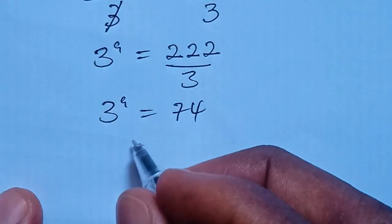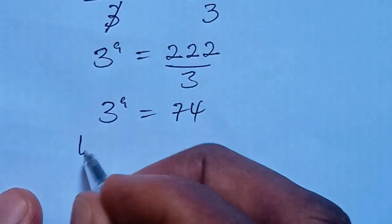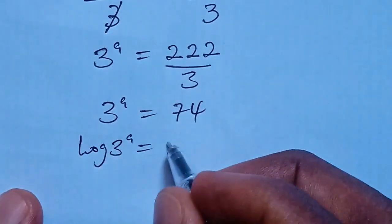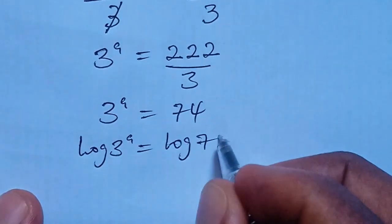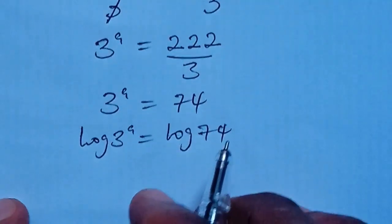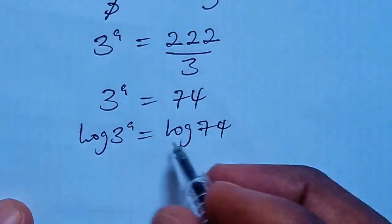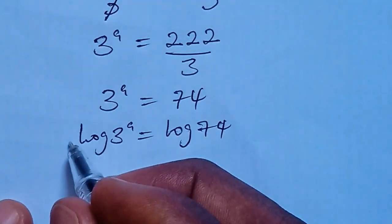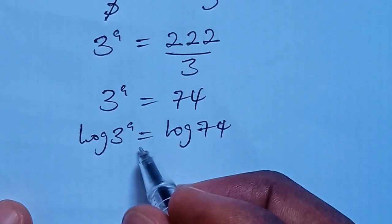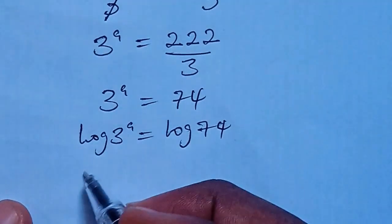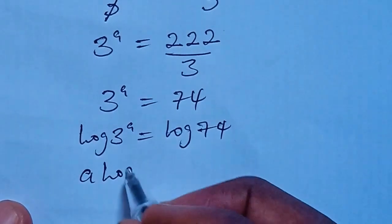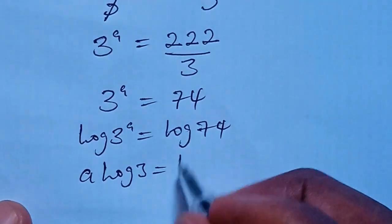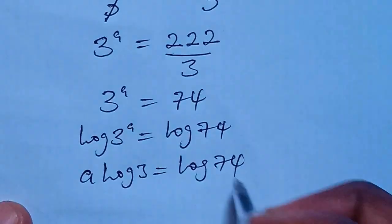Now, from here, we can take the log of both sides. Log of 3 to the power of A equal to log of 74. From here, we move this A down to the base using the log identity.